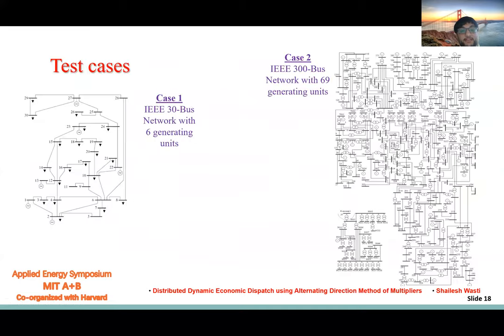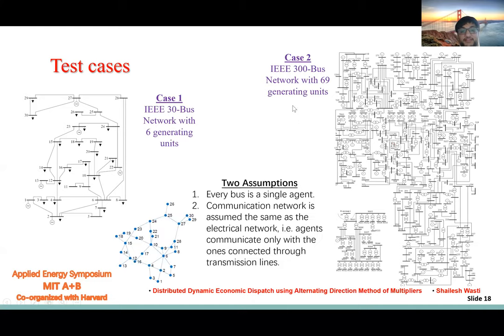Now the case study. We have this IEEE 30-bus network with six generating units, and IEEE 300-bus network with 69 generating units. We have two assumptions: every bus is a single agent, and the communication network is assumed similar to the electrical network. For 30-bus, this is the communication network.